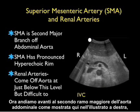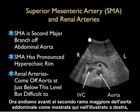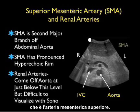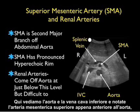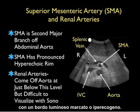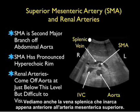Now let's move on to the second major branch of the abdominal aorta, which is the superior mesenteric artery. Here we see the aorta and IVC, and notice the superior mesenteric artery just anterior to the aorta, with a pronounced bright or hyperechoic rim. We also see the splenic vein arching just anterior to the SMA.